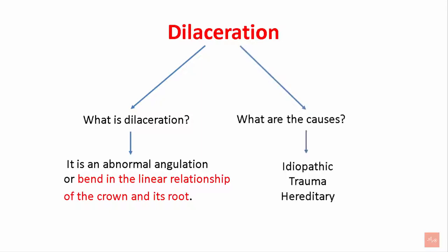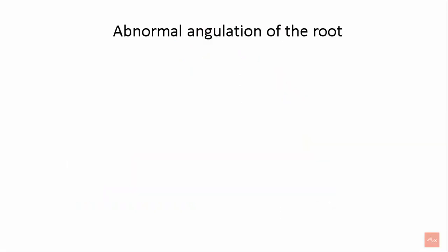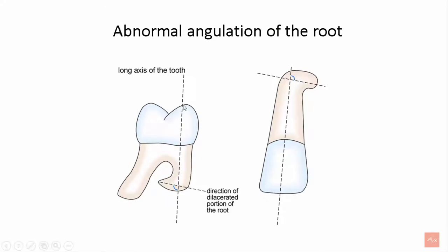What are the causes? Idiopathic, trauma and hereditary. Let's see what is abnormal angulation of the root. In this picture, this is the long axis of the tooth.